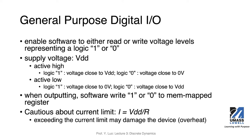In active high, when logic 1 is referenced, the corresponding voltage is close to VDD, the supply voltage, and logic 0 is close to 0 volts. In active low, logic 1 corresponds to a voltage close to 0, and logic 0 corresponds to a voltage close to VDD. If you are confused, you need to check the datasheet to understand if a signal is active high or active low.